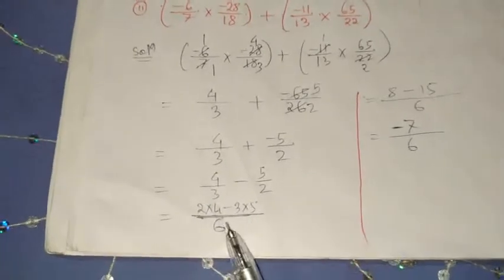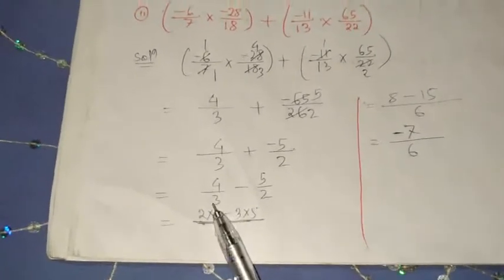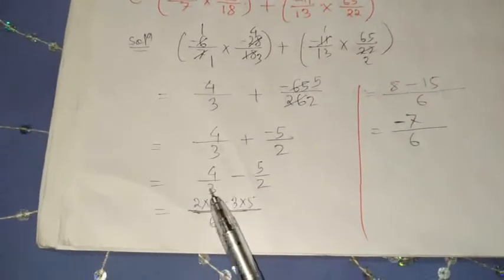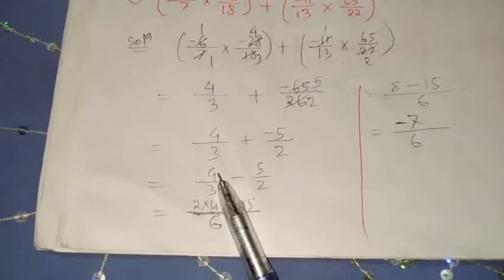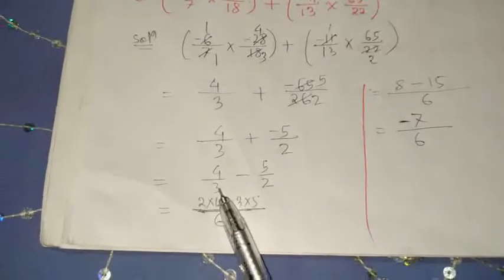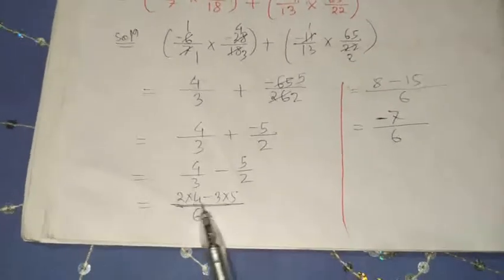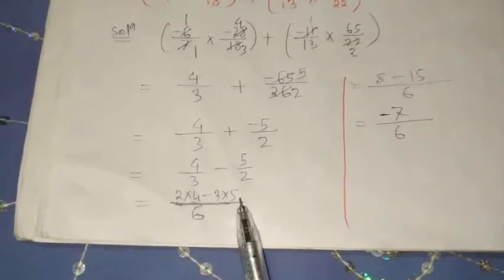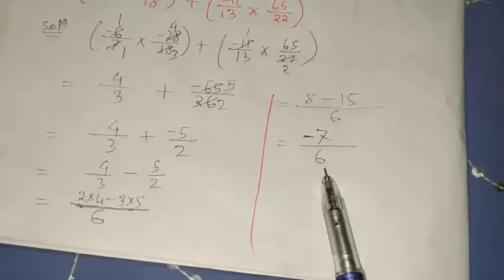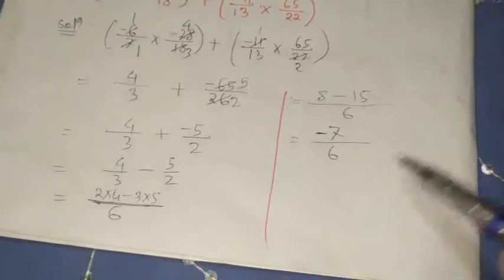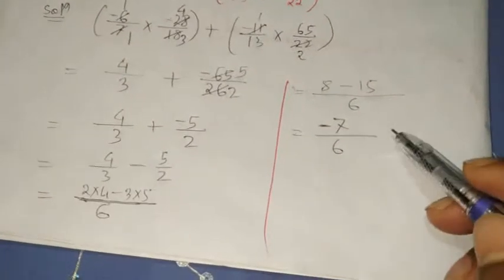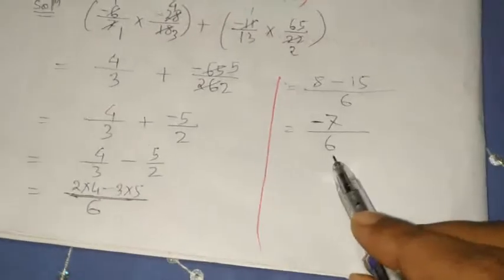We have to take LCM of 3 and 2, which is 6. Divide 6 by 3 and multiply with 4, divide 6 by 2 and multiply with 5. We get 2 into 4 minus 3 into 5 by 6, which is 8 minus 15 by 6, giving minus 7 by 6. This rational number doesn't have common factors, so our answer is minus 7 by 6.